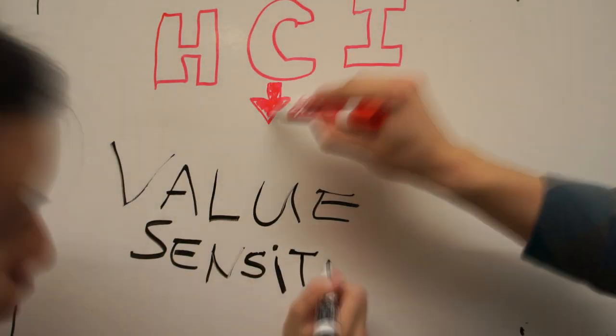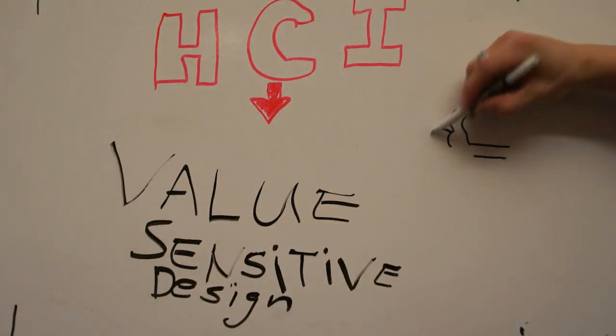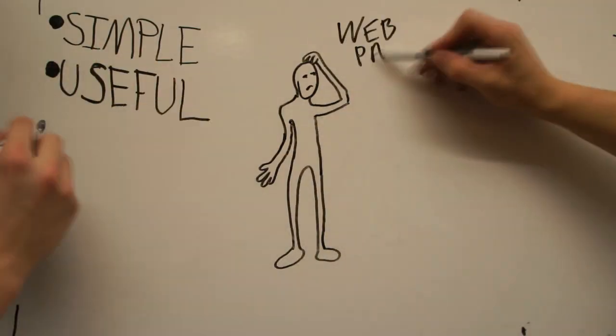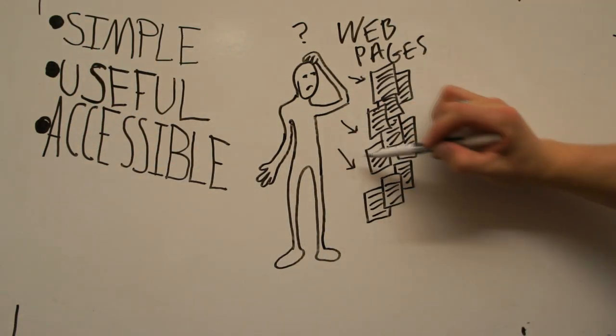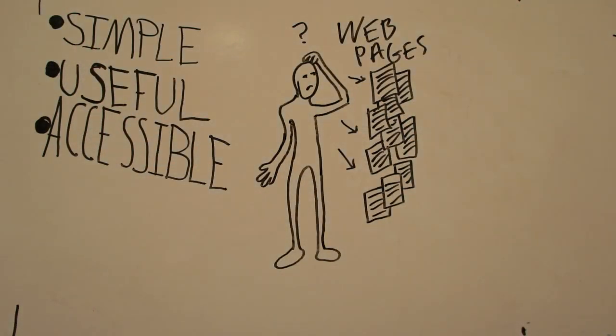An important subset of HCI is value-sensitive design. What makes a piece of technology usable? Again, simplicity, usefulness, and accessibility are among the key traits we strive towards in usability design.